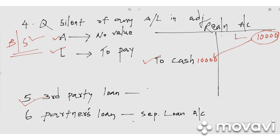Fifth special item: any third-party loan — bank loan, overdraft, or any loan from any outsider including a partner's relatives — should be written in the realization account credit side as a liability in step two. Sixth special item: if it is a partner's own loan, do not write it in the realization account. Prepare a separate loan account to settle the partner's loan.